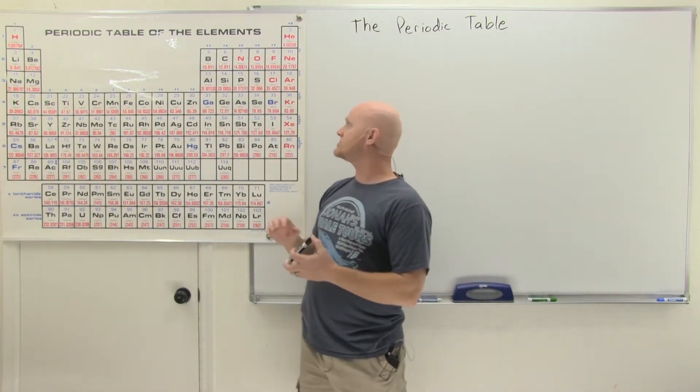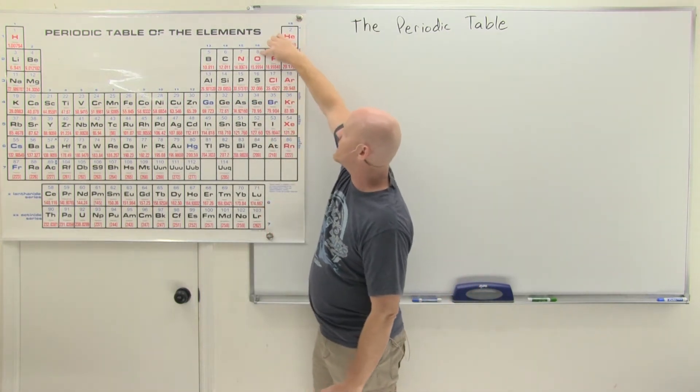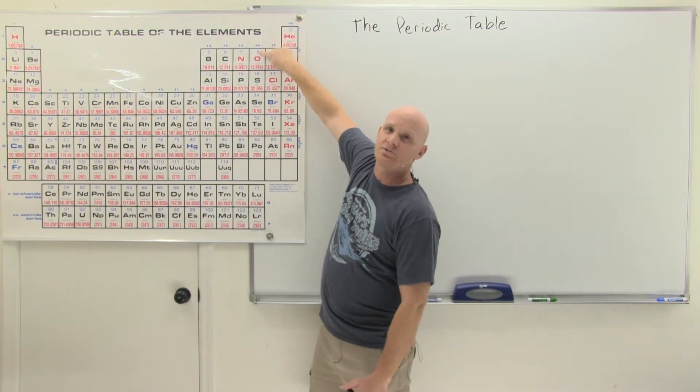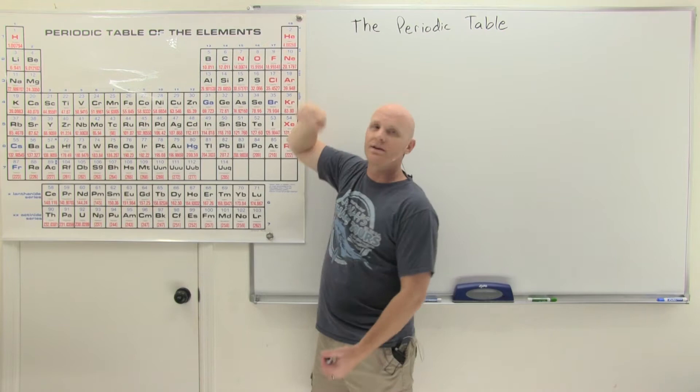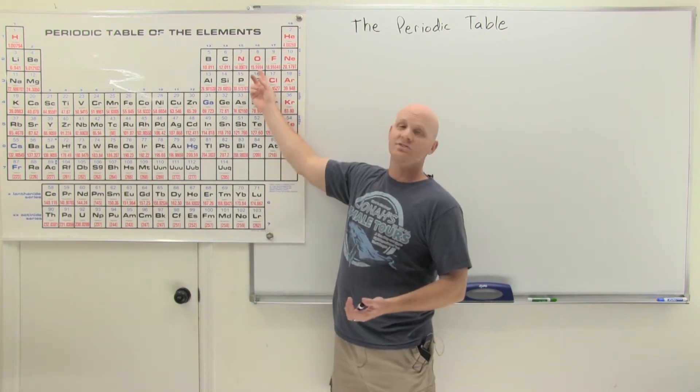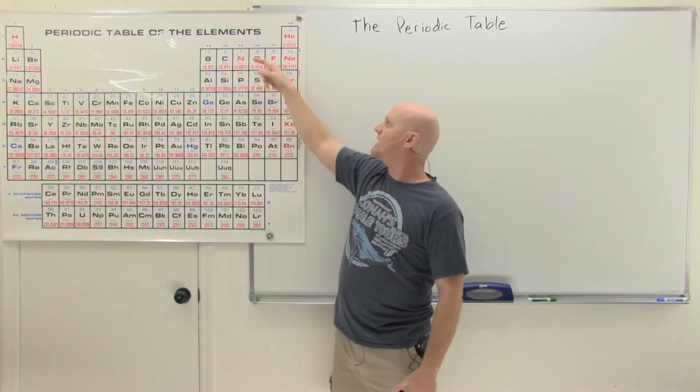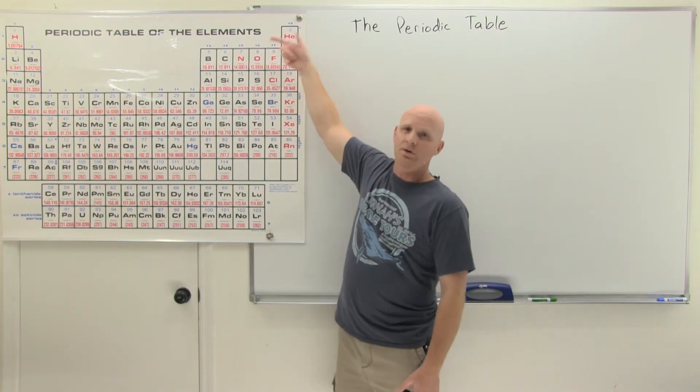Now, a couple things you should know here. So once again, this guy right here is the atomic number. It's usually written right at the top of the element symbol, and it could be in the center, it could be off the left or right, but it's usually written at the top. We've got the atomic mass down below, and that's its normal spot as well. And then we've got the element symbol.